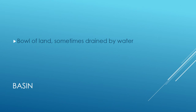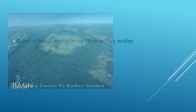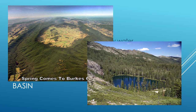Our first physical geographic term is basin — a bowl, like your cereal bowl. Think about that shape: a bowl of land, sometimes drained by water. The first picture is called Burke's Garden, in southwestern Virginia. You can see how perfectly round it is — surrounded by a mountain with a bowl-shaped valley in the middle. Some people call it a thumbprint — a giant's thumbprint — because on Google Earth it looks like somebody took their giant thumb and pushed down on the Earth.